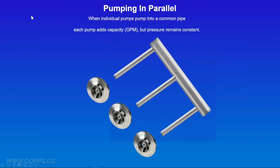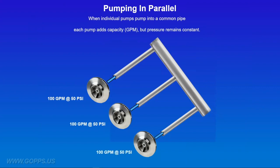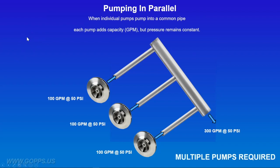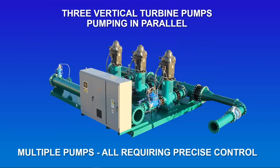When individual pumps pump into a common pipe — pumps in parallel — the result is the opposite of series: each pump adds capacity but pressure remains constant. The first pump puts 100 GPM at 50 PSI into the manifold; when the second comes on, it also adds 100 GPM at 50 PSI, and the third does the same. The output then is 300 GPM at 50 PSI. Each pump in a parallel configuration only produces part of the overall capacity, but multiple pumps are required.